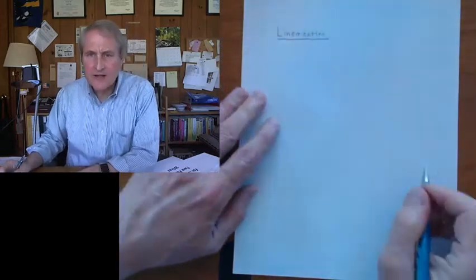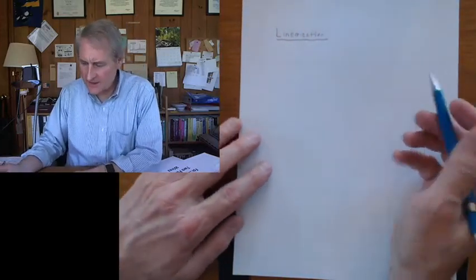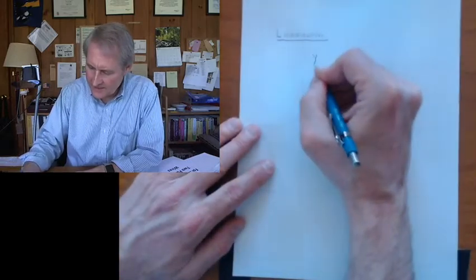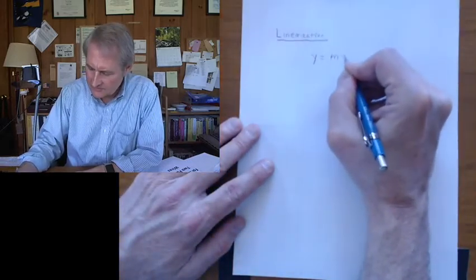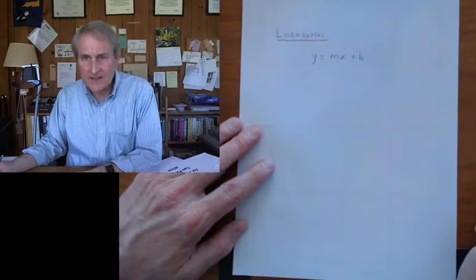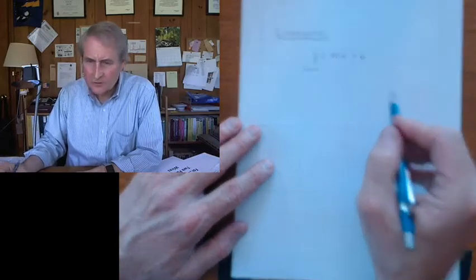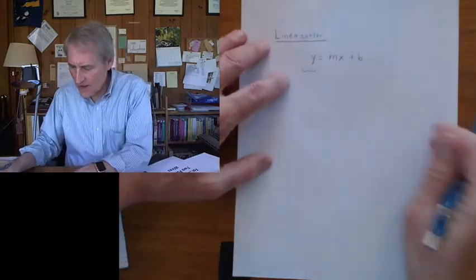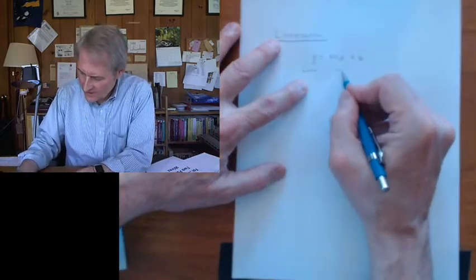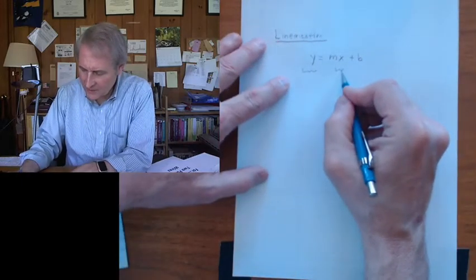I'll just remind you, the idea is to take whatever equation that you're trying to linearize and write it in the form of a straight line. And what we call y here will be the independent quantity, and what we call x will be the dependent quantity.